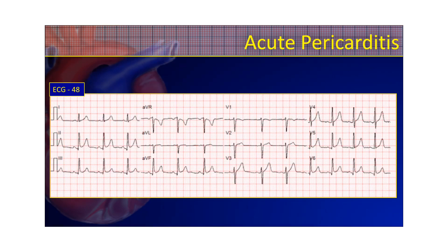Here's one with a little bit more significant ST elevation. On this one, that Spodick's sign is even more pronounced and more obvious — you can see it in almost every one of these leads that has ST elevation. Again, it's concave upright ST elevation, going across leads that are reciprocal to each other. The patient is the big indicator. Is this patient's pain positional? Are they febrile? Because it's an inflammation, it's an infection — it could be causing them to be septic. Do a good assessment of your patient and identify this acute pericarditis.